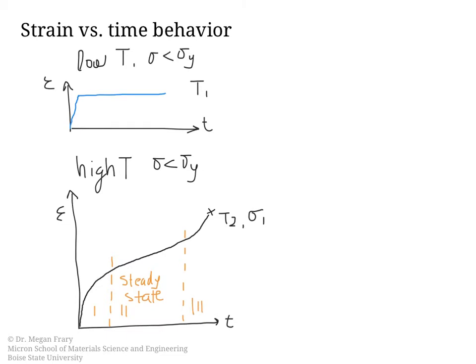Most creep deformation occurs in stage two — the steady state region. This region is actually usually much longer than it appears in a schematic drawing. After stage two, the strain increases rapidly and the specimen fails. We can denote the slope of the stage two region as the steady state creep rate.